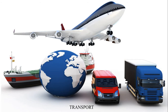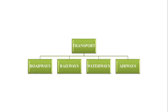Aeroplanes have made travel faster. Now it takes only six to eight hours to travel from India to Europe. Modern means of transport thus saves time and energy. The four major means of transport are roadways, railways, waterways, and airways.